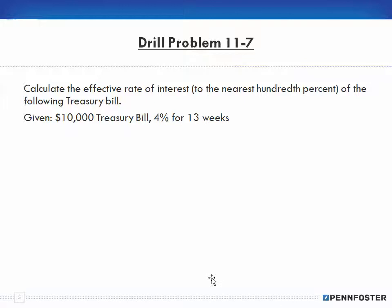Number 11: calculate the effective rate of interest to the nearest hundredth percent for the following Treasury bill. We're given a $10,000 Treasury bill at 4% for 13 weeks. When we're talking about weeks, remember 4% is annual. There are 52 weeks in a year, so we have to keep our time frames all the same.